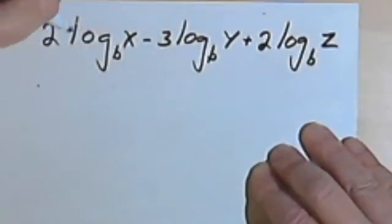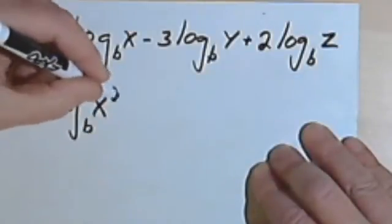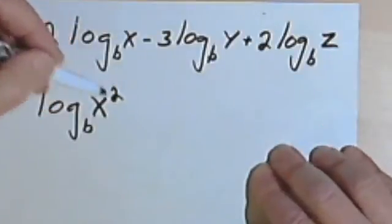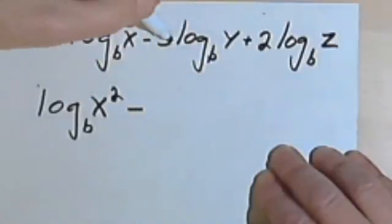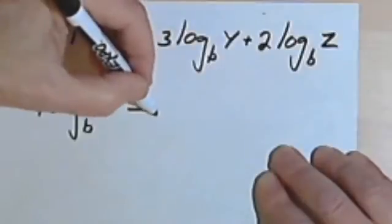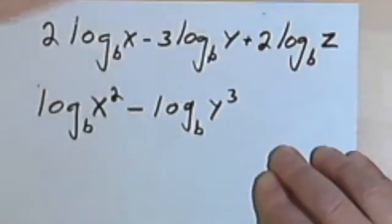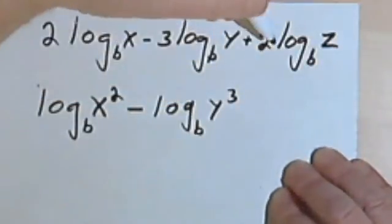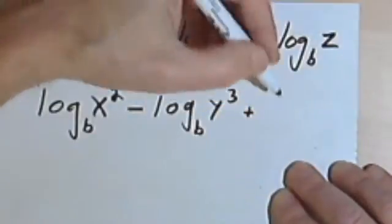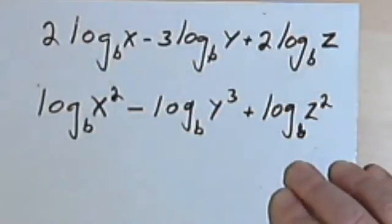I'll take the coefficients and make them exponents for the arguments of each of the logs. So instead of 2 log base b of x, I'm going to have log base b of x squared — the 2 that was a coefficient now becomes an exponent. Then subtracting 3 log base b of y becomes log base b of y to the third. And I'll do the same thing with the last part: the 2 becomes an exponent, giving log base b of z squared.